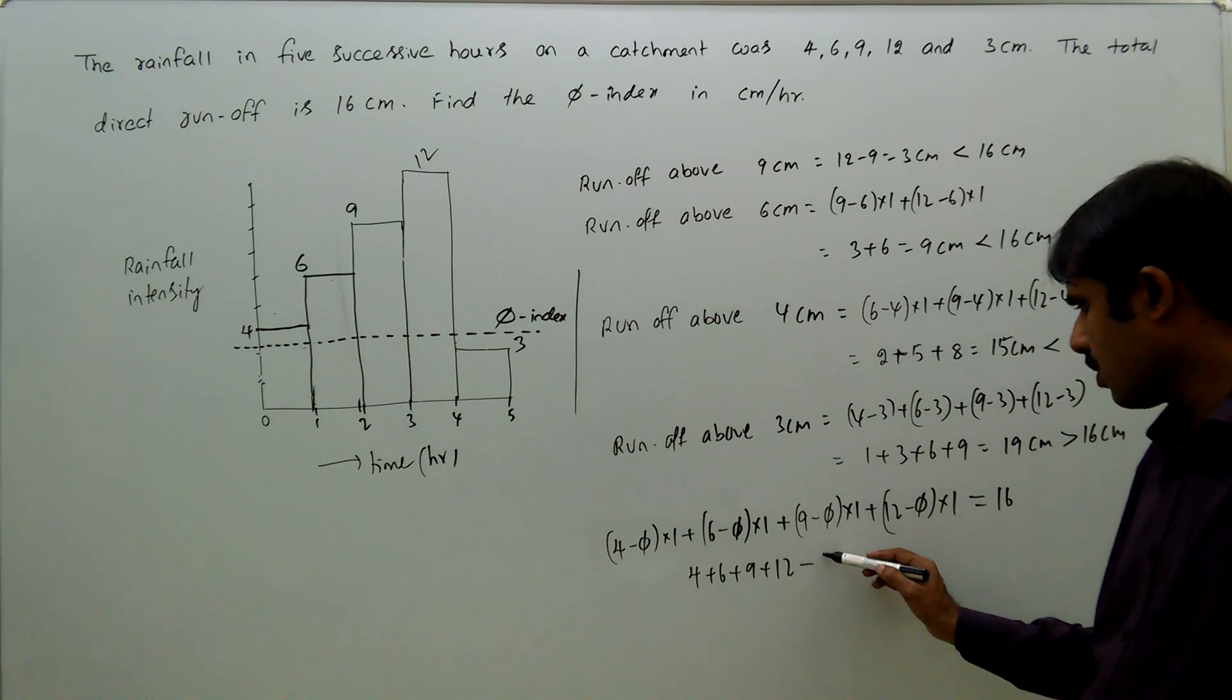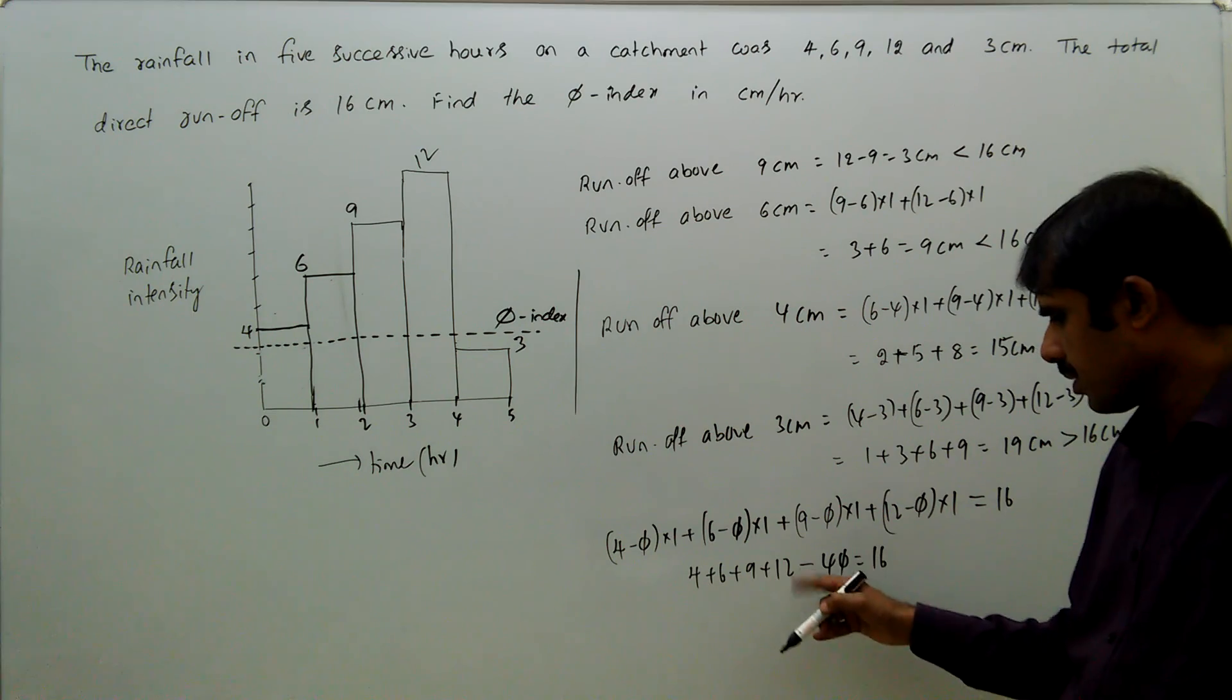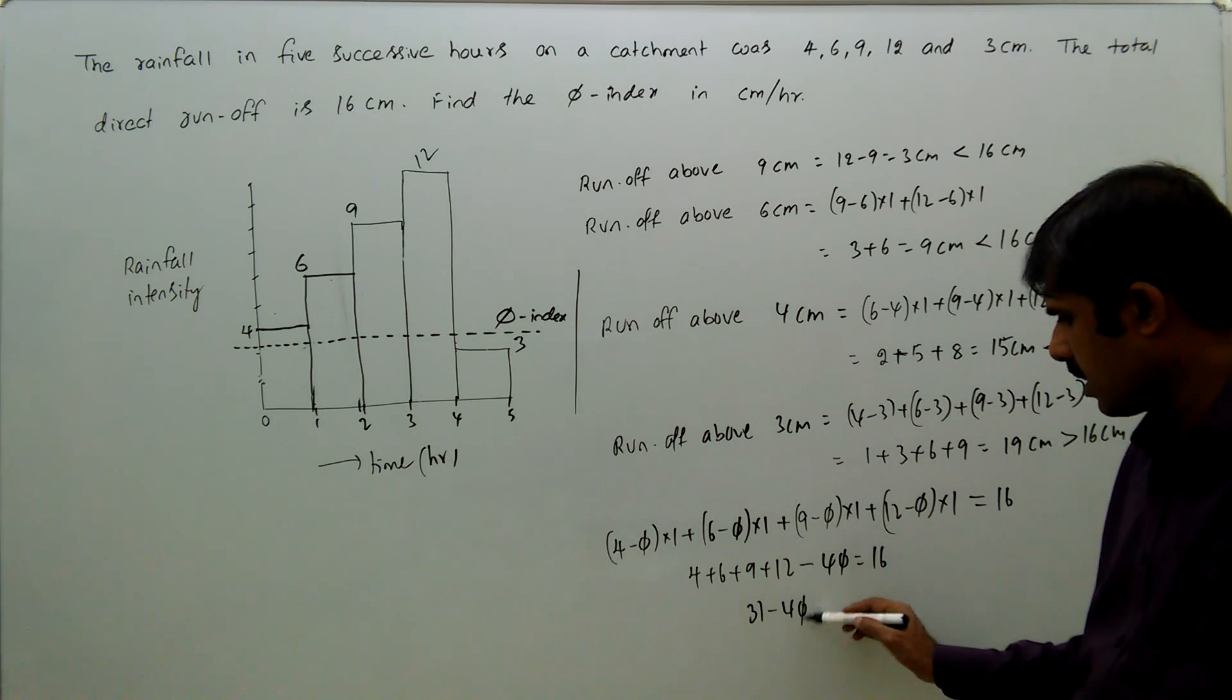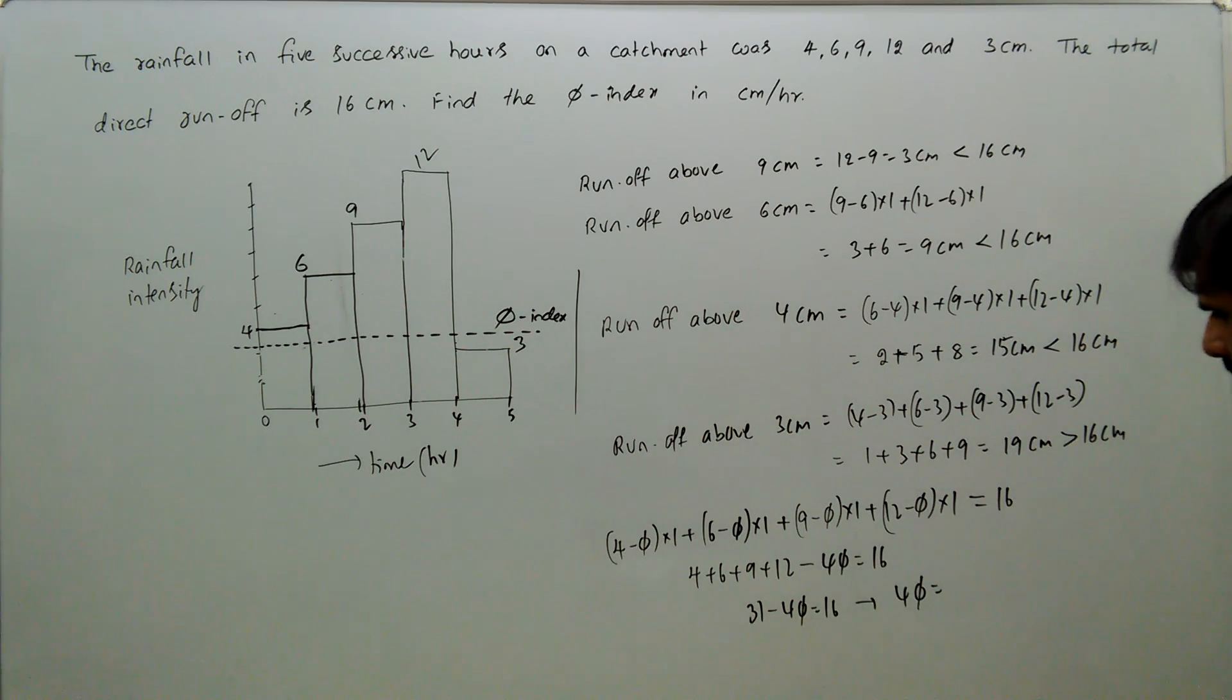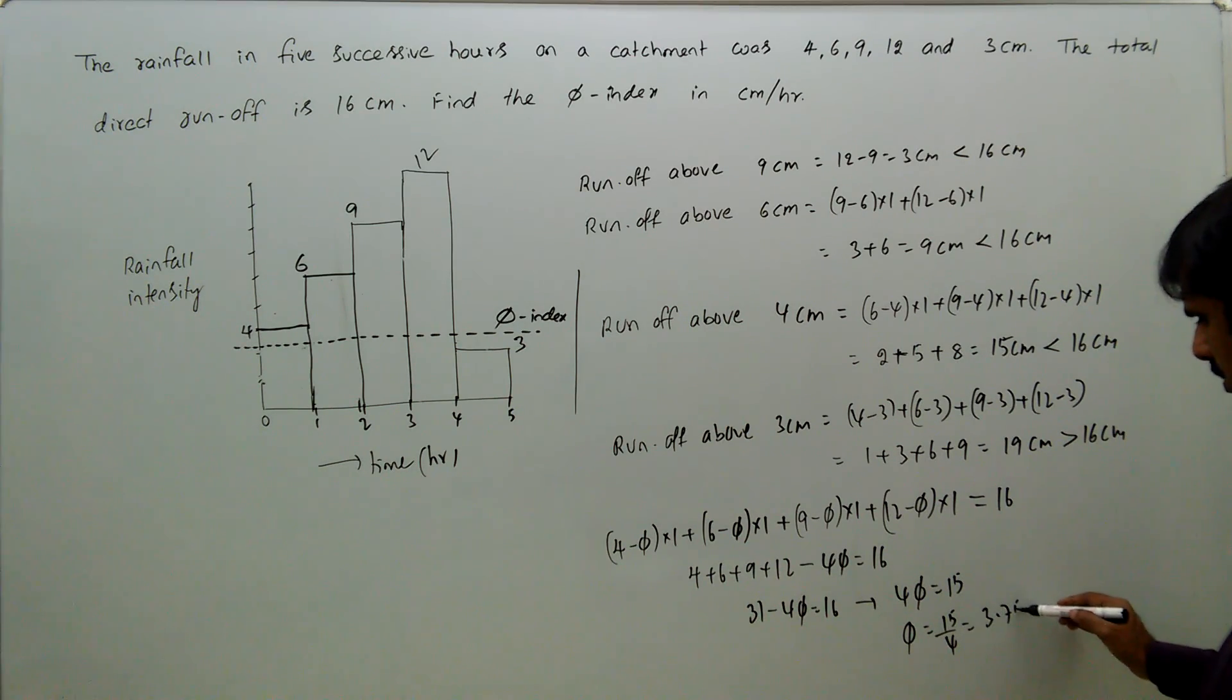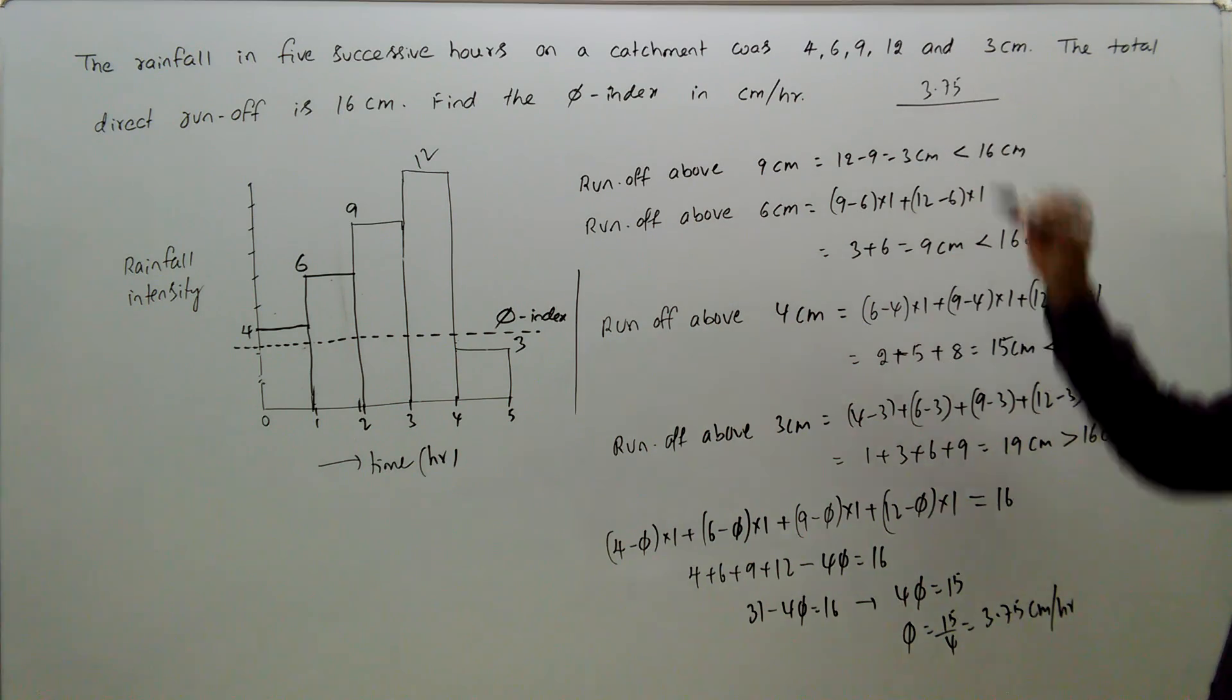So 4 plus 6 plus 9 plus 12 minus 4φ equal to 16. That is 31 minus 4φ equal to 16. From this, 4φ equal to 31 minus 16, that is 15. Or φ equal to 15 by 4, that is equal to 3.75 centimeter per hour. That is the answer.